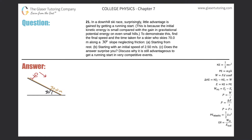Number 21. In a downhill ski race, surprisingly little advantage is gained by getting a running start. This is because the initial kinetic energy is small compared with the gain in gravitational potential energy on even small hills. To demonstrate this, find the final speed and the time taken for a skier who skis 70 meters along a 30-degree slope, neglecting friction.